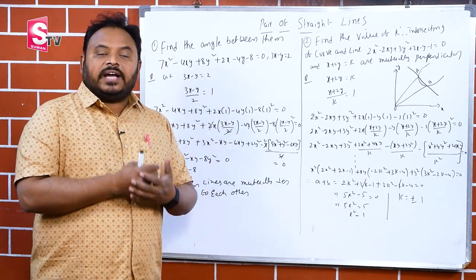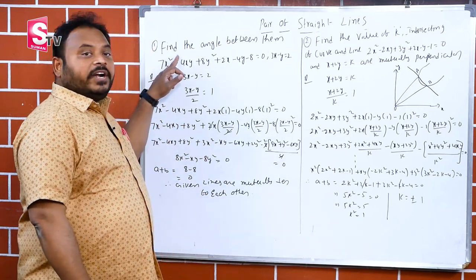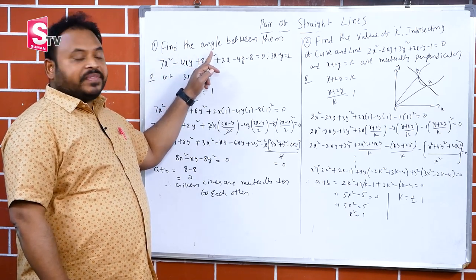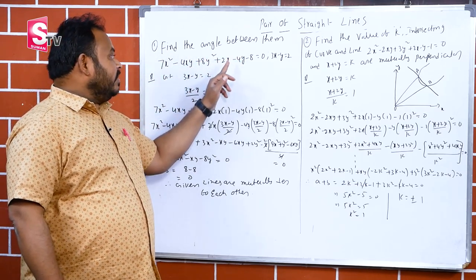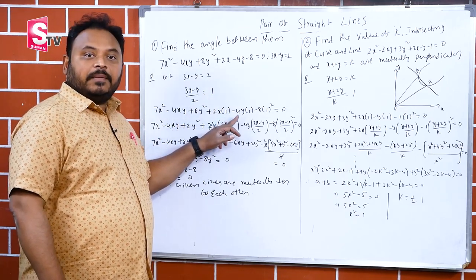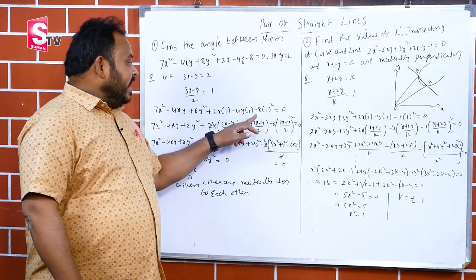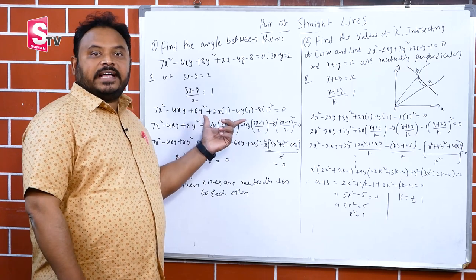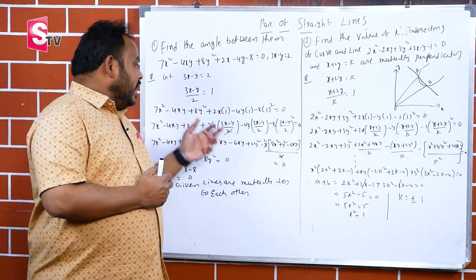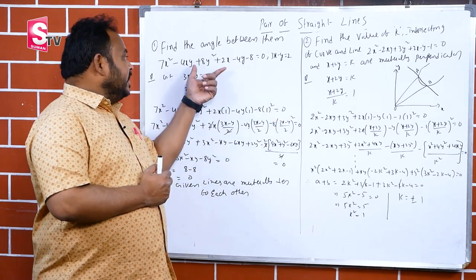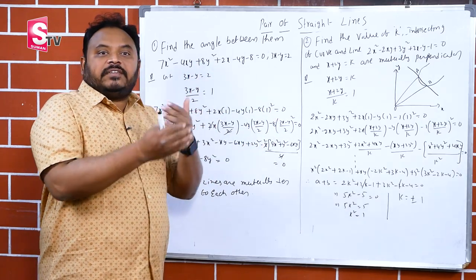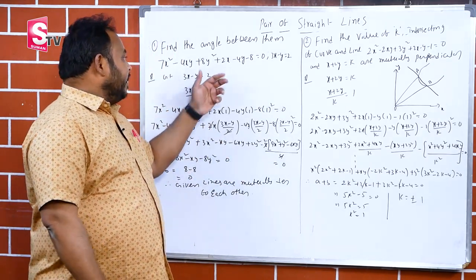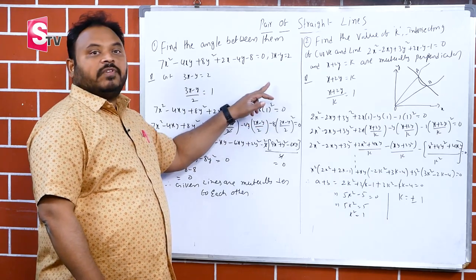In the curve equation, there are terms with x², x¹, y¹, and y². The powers are 2 here. So for the terms 2x and minus 4y (which are power 1), we multiply by 1; and for the constant minus 8, we multiply by 1². This converts it to a homogenized equation.